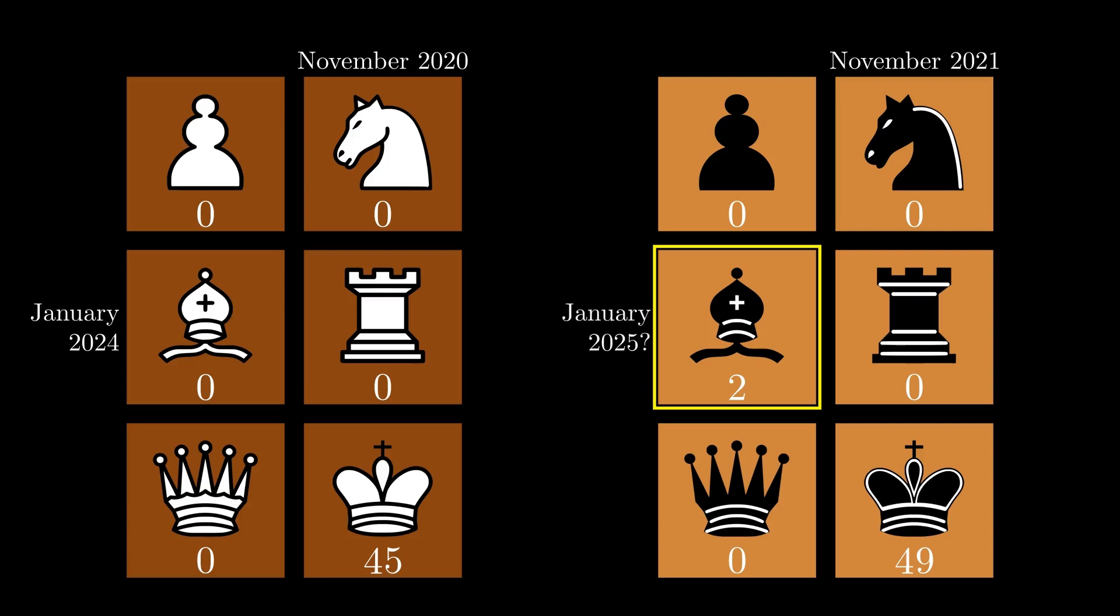There are too many King moves remaining to say something meaningful about them. However, the rate of new King checkmates for 2024 is about 1 per month per color. If that trend holds then they should all be played by the end of 2028, with White finishing earlier in the year than Black.